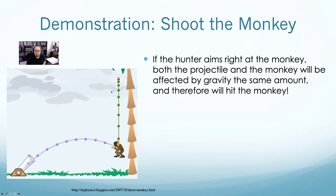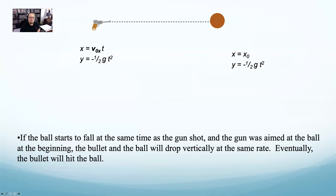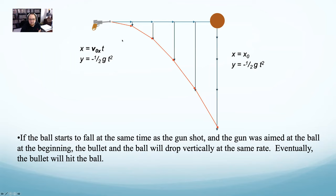As long as there's enough initial velocity to make it to the monkey, it'll hit it somewhere in the path. If it's super fast, it might hit at the top; if it's super slow, it might hit at the bottom — as long as there's enough to cover the distance in X. So more force means it gets there faster, so it'll hit the monkey higher. It all just falls into place. So yeah, you want to aim at it.